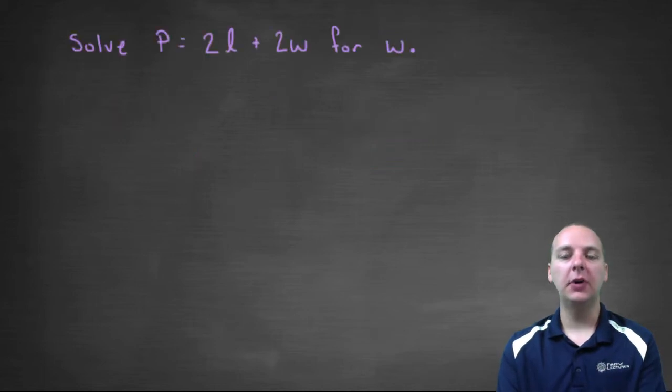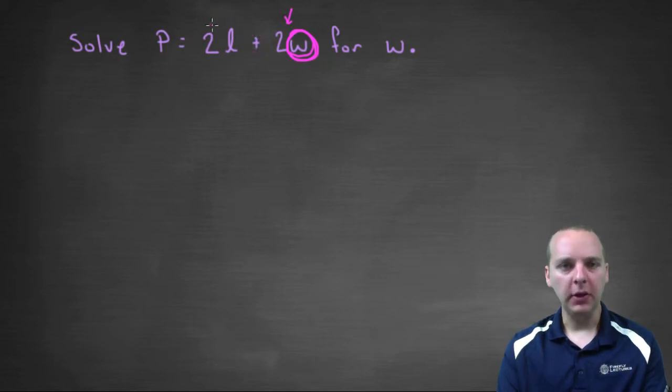Let's see if we can solve P equals 2L plus 2W for W. W's right here. So I see some things that are in my way - I've got a two that's in my way, and a 2L that's being added to that. If we can get those away or put those on the left-hand side, then we'll isolate our W.